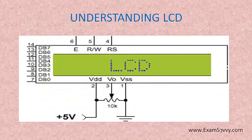Now we can understand the LCD pin details — what the pins are and where they are connected. Pins 1 to 3 are mainly for voltage supply. Pins 7 to 14 are mainly data pins, indicated as DB0 to DB7. If all 8 pins are used, then we go for 8-bit mode. If only 4 bits are used, then it is 4-bit mode. These data pins will be connected to the AT89S51 microcontroller and we can transmit our information.